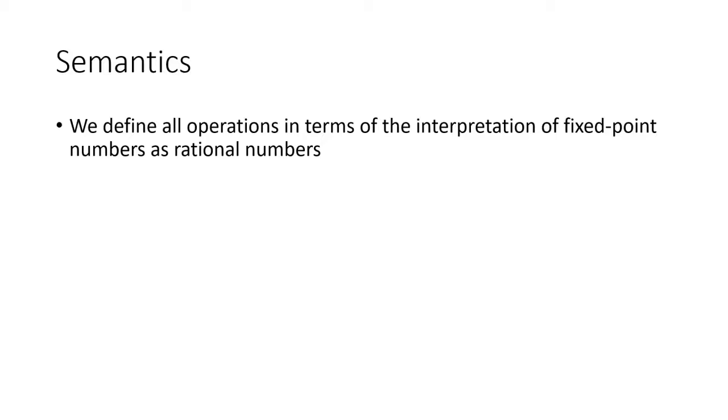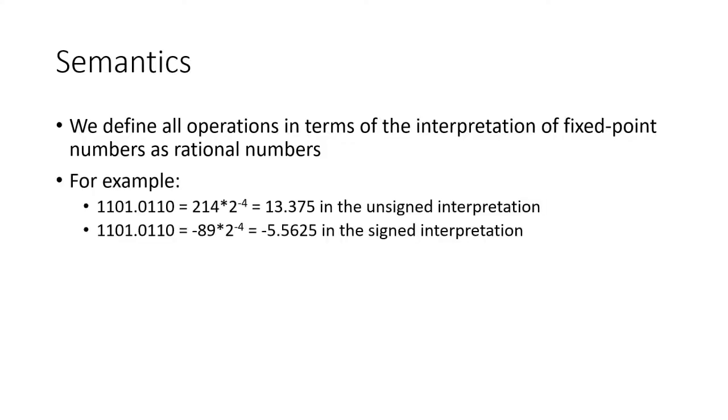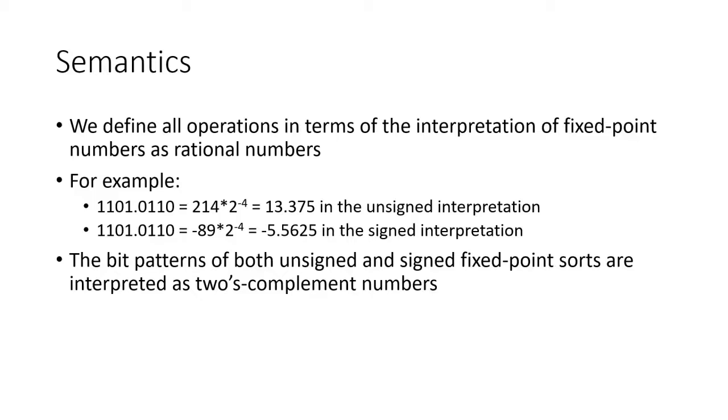We define all operations in terms of the interpretation of fixed point numbers as rational numbers. For example, we have the following bit pattern in 4.4 format. This number is 214 times 2 to the negative 4th, or 13.375 as an unsigned fixed point number, or negative 89 times 2 to the negative 4th, or negative 5.5625 as a signed fixed point number. The bit patterns of fixed point numbers are interpreted as 2's complement numbers.